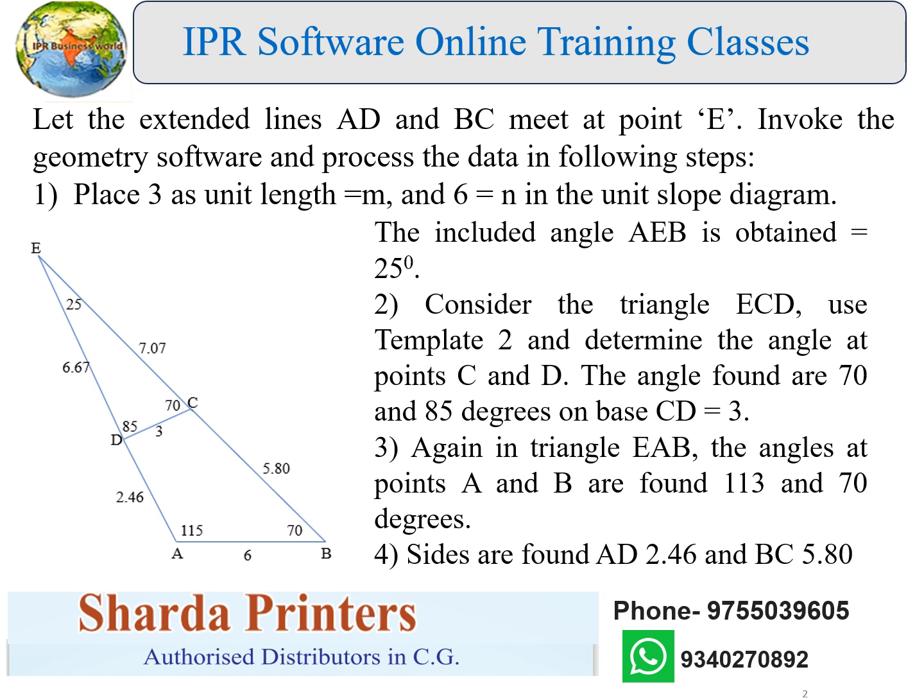Now in triangle EAB, the angles at points A and B are found to be 113 and 70 degrees. Sides are found: AB equal to 82.46 and BC equal to 5.80.